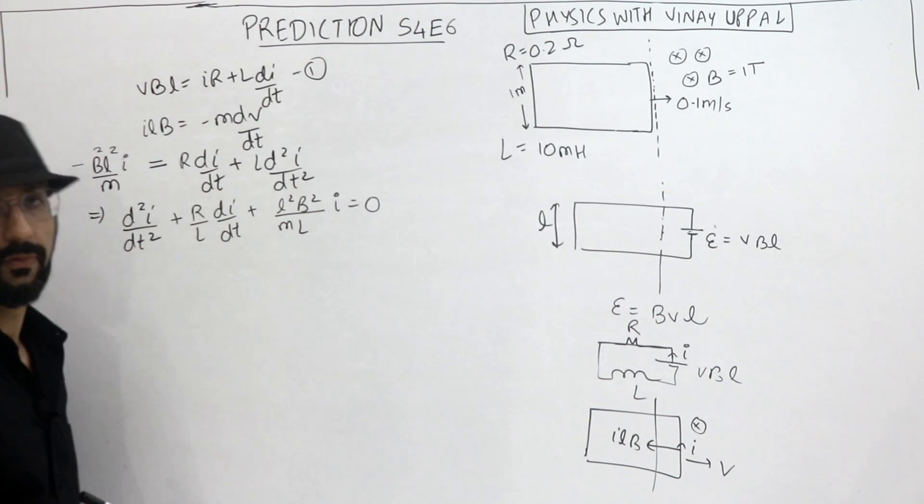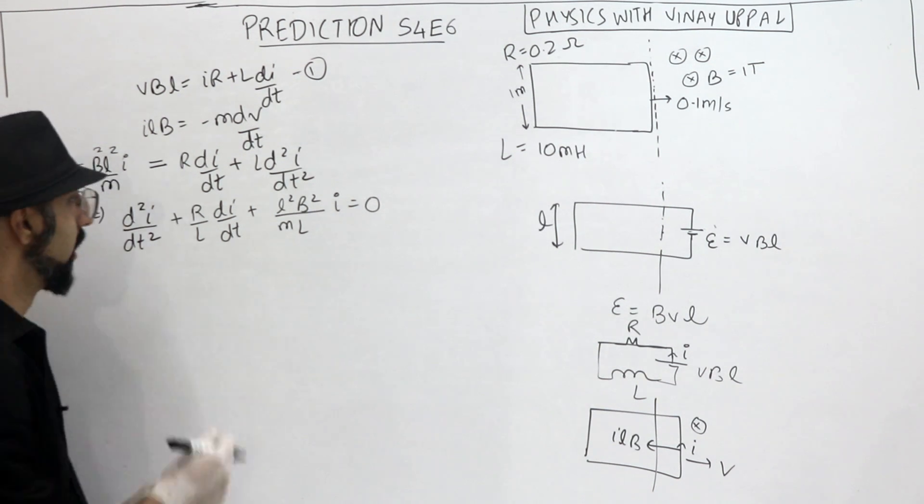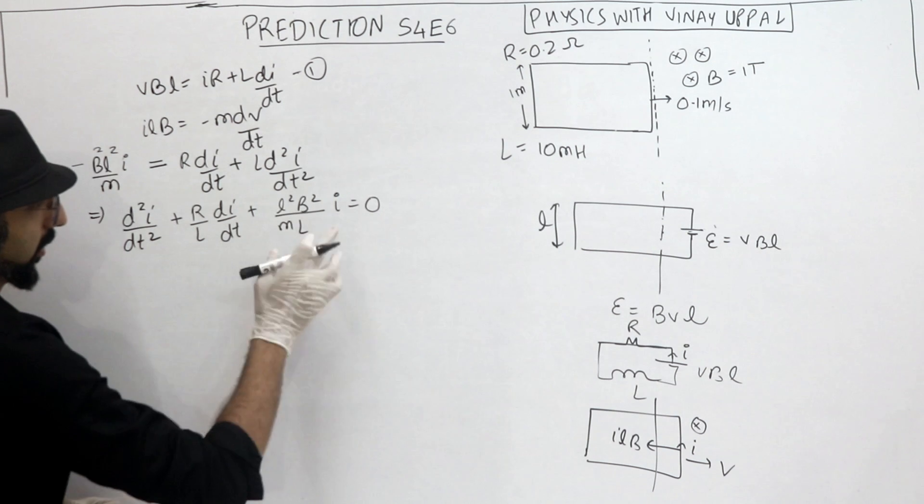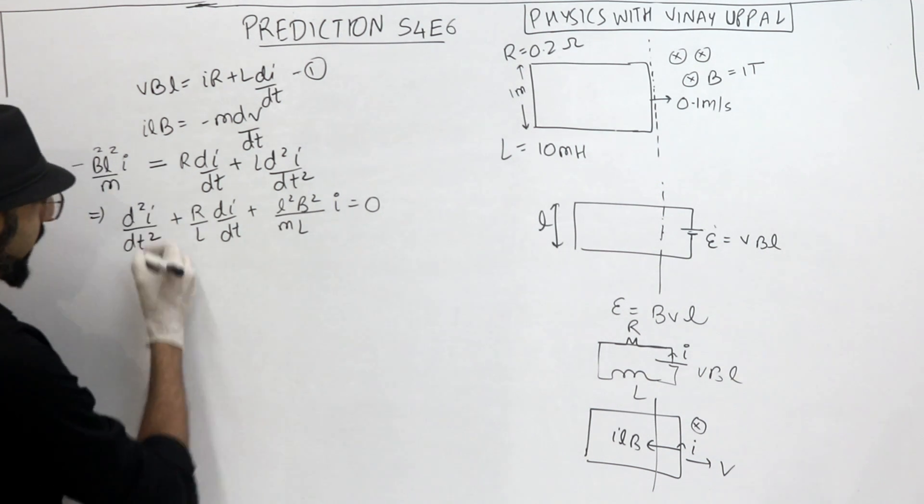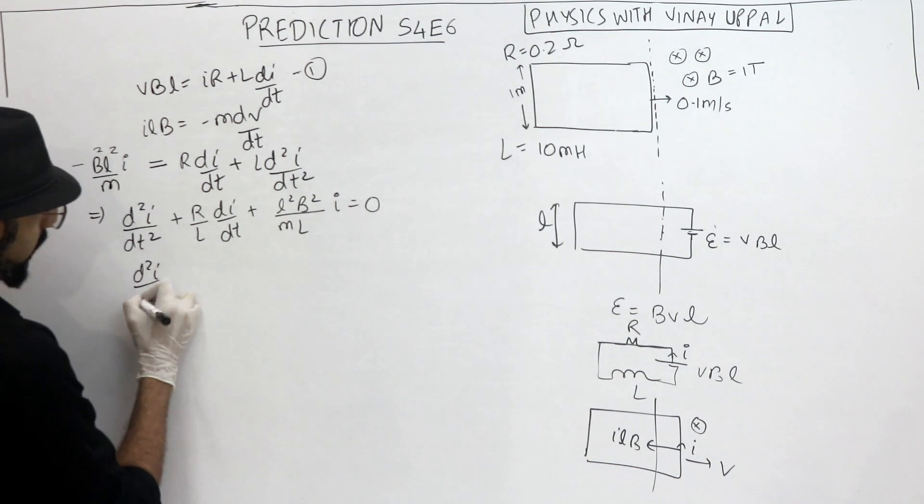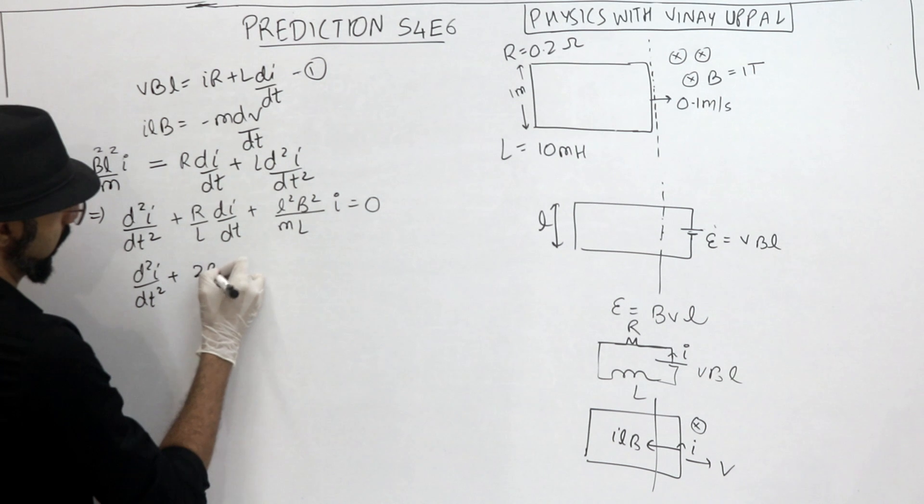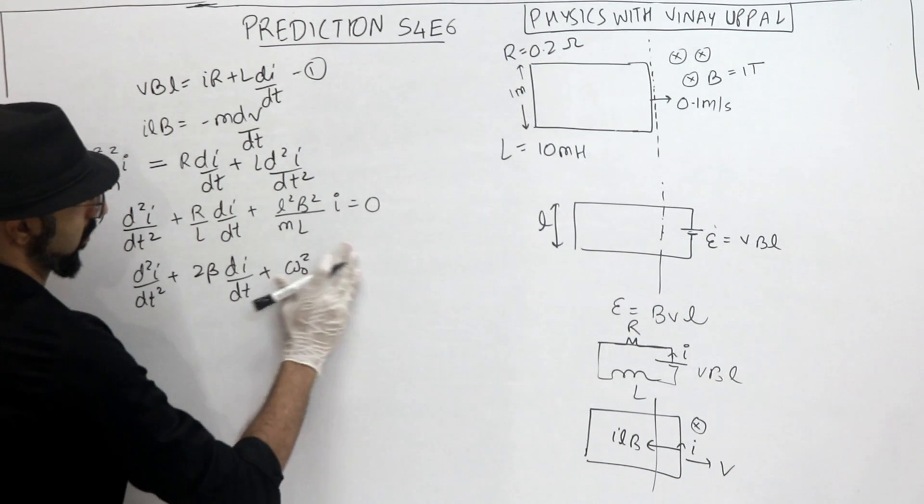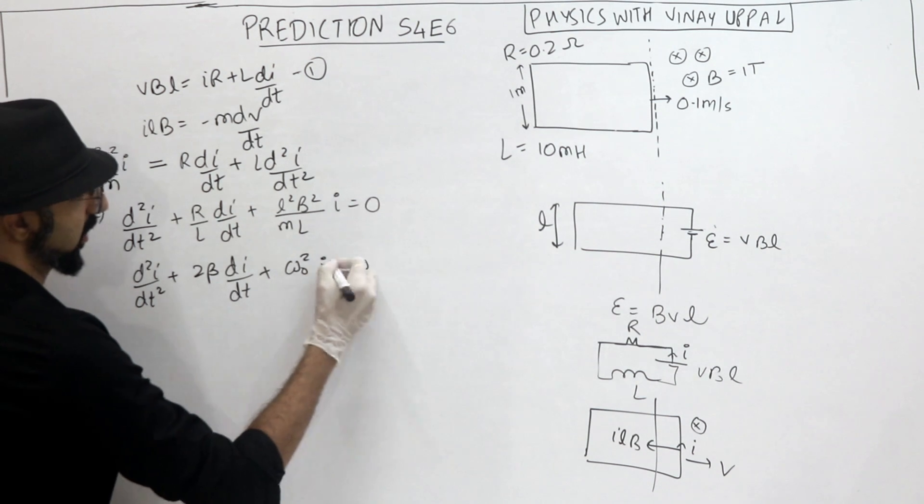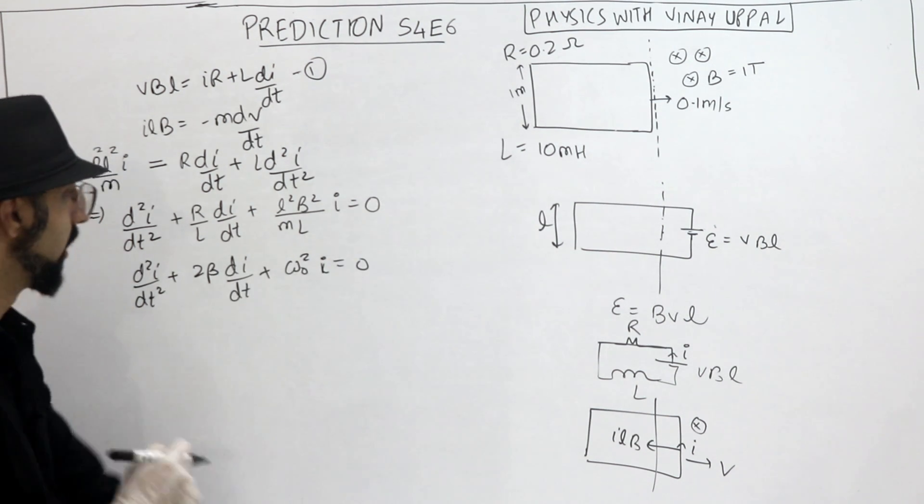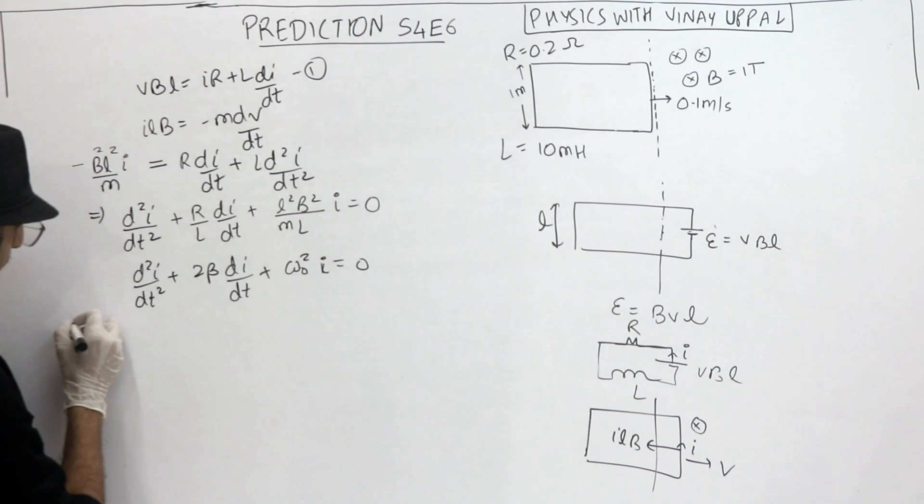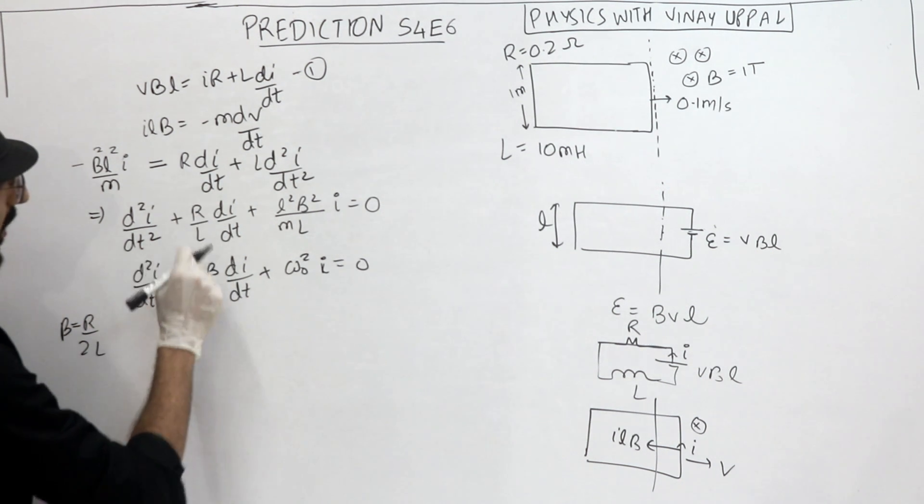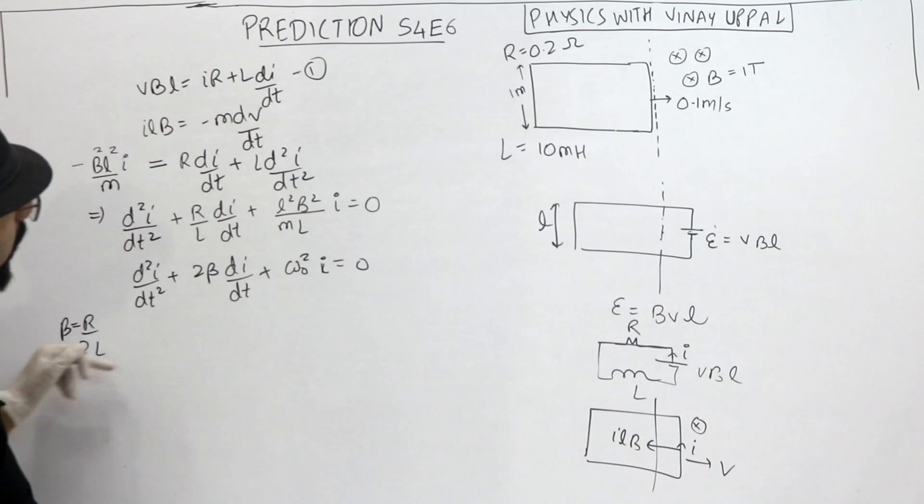Okay. So this equation is the equation for damped oscillation. Right. This is a standard equation. d²i double derivative, single derivative and the function itself. This is a standard equation. Okay. So let me compare it with a standard damped equation. So this is a standard form of the damped equation. So beta ka value kya hai? R/L. So beta is R by, sorry, R by 2L. Right. R by L is 2 beta. So beta is R by 2L.